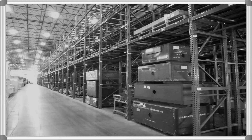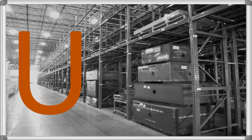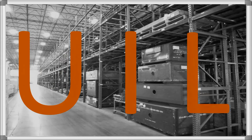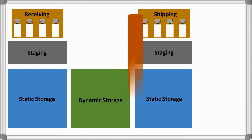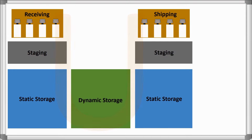Warehouse layout options to consider include U-shaped, I-shaped, and L-shaped patterns. A U-shaped warehouse product flow is the most common type of layout.